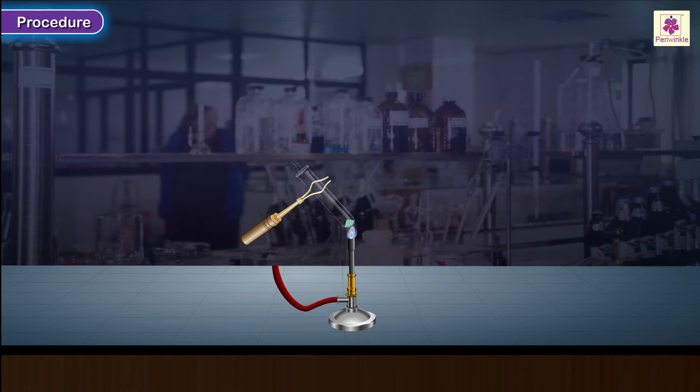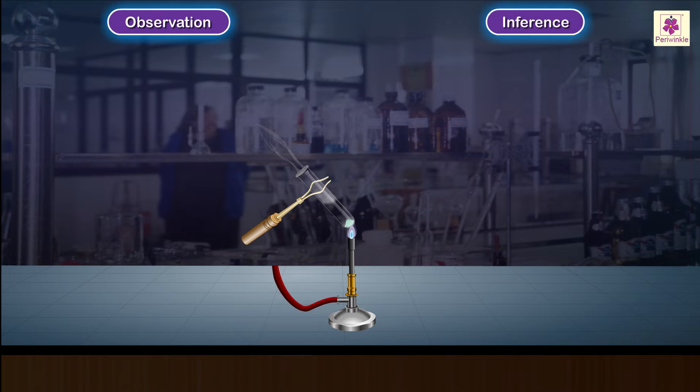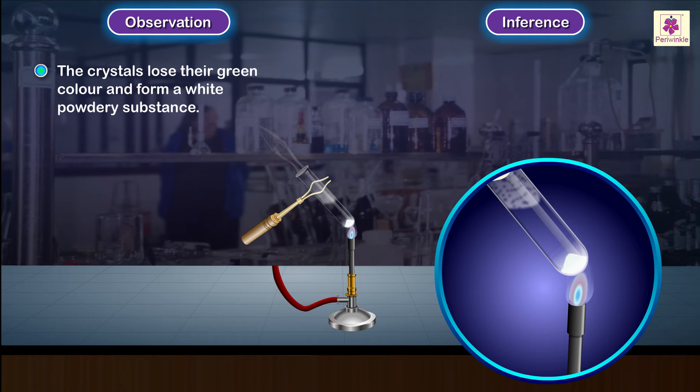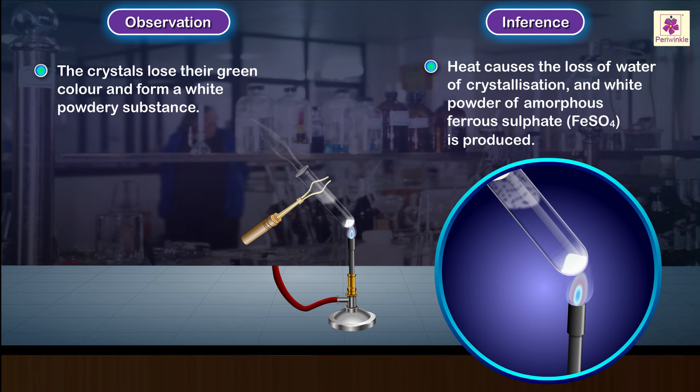Procedure: Using a test tube holder, gently but continuously heat the crystals in the test tube on a Bunsen burner. Observation and inference: The crystals lose their green color and form a white powdery substance. Heat causes the loss of water of crystallization, and white powder of anhydrous ferrous sulfate is produced.